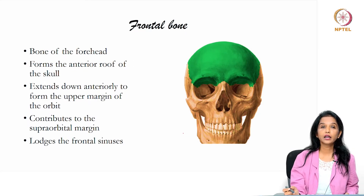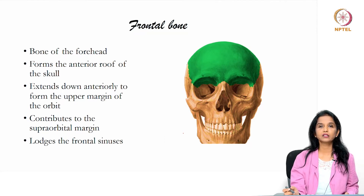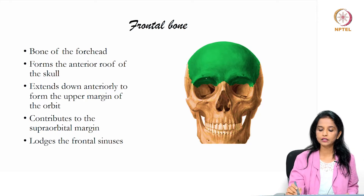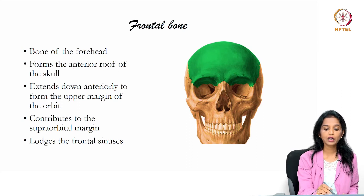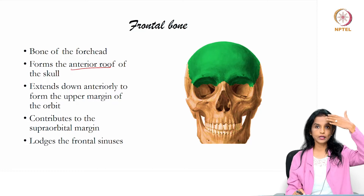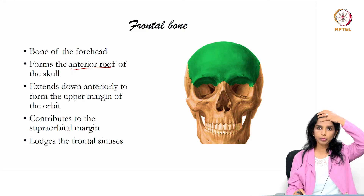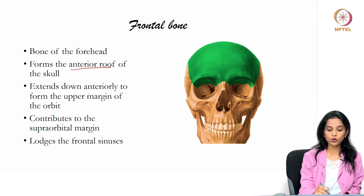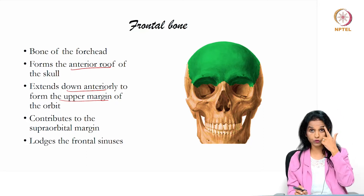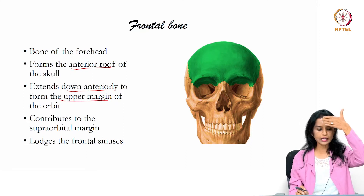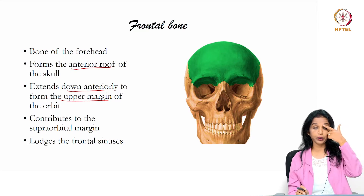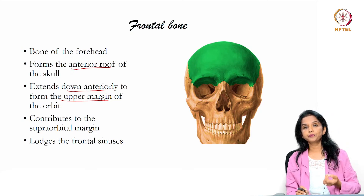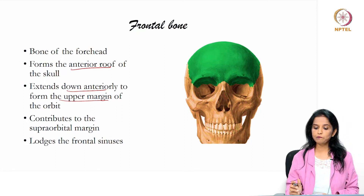Now we move on to learning the individual bones. The first and most prominent cranial bone is the frontal bone. As you can see highlighted here, it forms the anterior roof of the skull. It extends down anteriorly and forms the upper margin of the orbit — also called the supraorbital margin — and contributes to the supraorbital margin of the orbit.